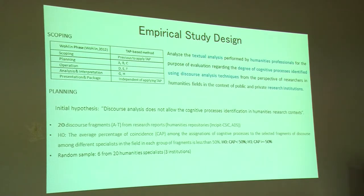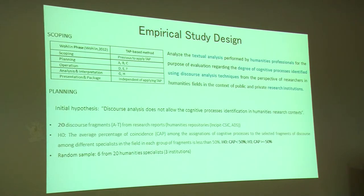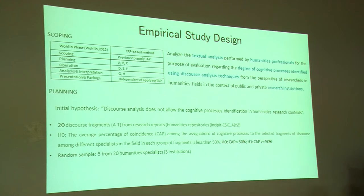We plan an experiment with this goal in mind. Our initial hypothesis was that discourse analysis does not allow cognitive process identification in a humanities research context. We asked six to twenty humanities professionals from three different institutions — from the Xunta de Galicia, the Institute of Heritage Science, and a private institution in Berkeley — in order to have both public and private sector participants. They were asked to analyze text and state, using think-aloud, what they were thinking about the textual analysis. They characterized twenty discourse fragments from different repositories, from FESIC and an algorithmic data service.